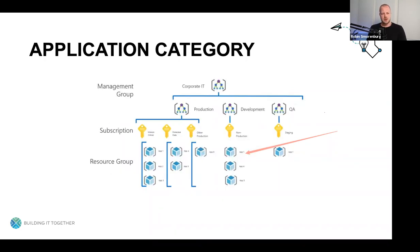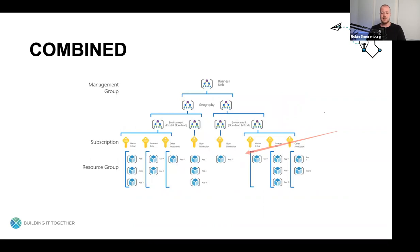The next design strategy is the application category approach. This builds on top of the workload separation approach by adding application categories under the production and pre-production management groups. The workload categories are different for every organization and are based on various topics such as business criticality, access controls, data protection needs, or compliance requirements. Because they're flexible, you can combine strategies as well.